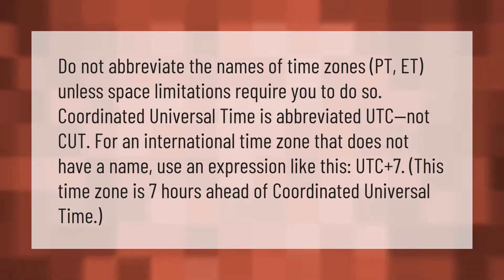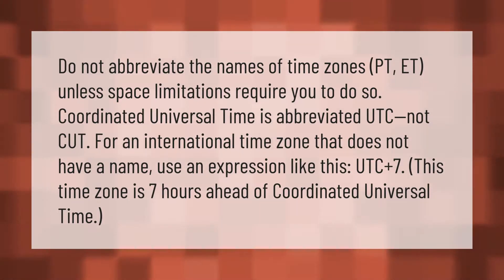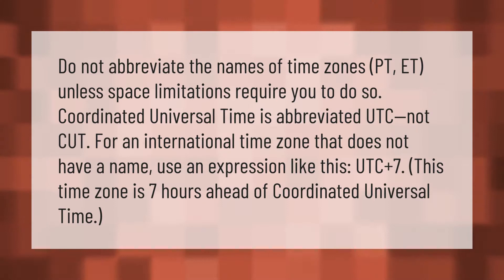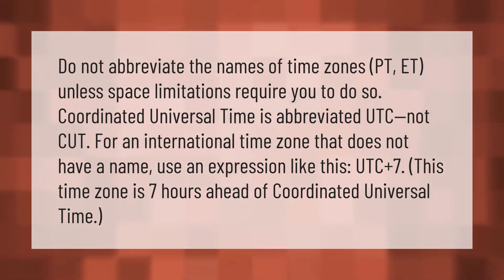Coordinated Universal Time is abbreviated UTC, not 'CUT'. For an international time zone that does not have a name, use an expression like UTC+7, meaning that time zone is seven hours ahead of Coordinated Universal Time.